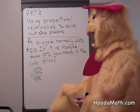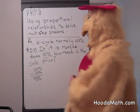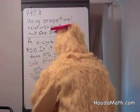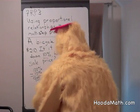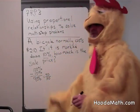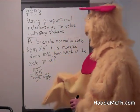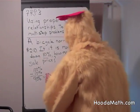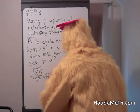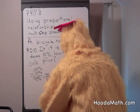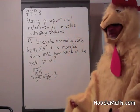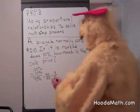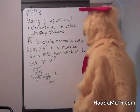It's helpful to change 90% to the ratio 90 over 100. That's what 90% means. But we could reduce this 90 over 100 to 9 tenths. It's always easier to work with smaller numbers. These two are proportional.